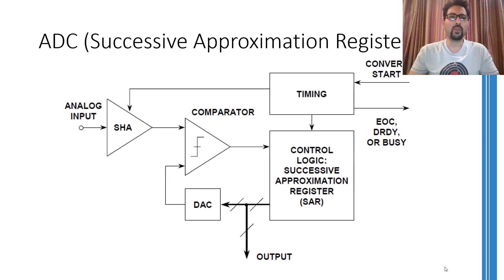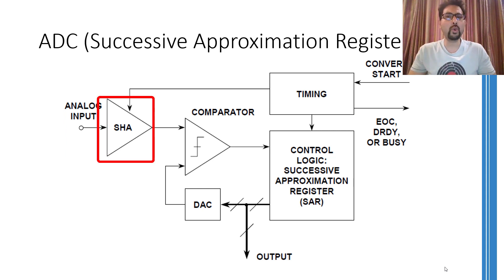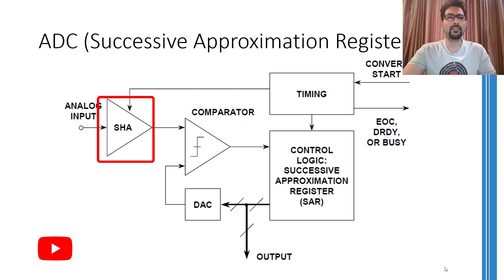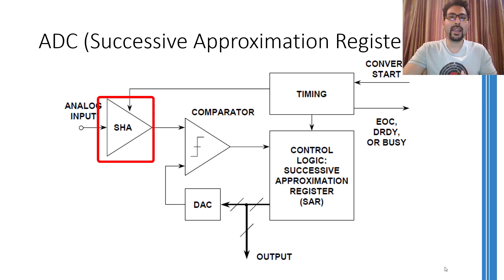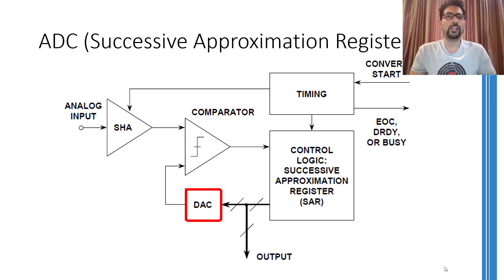This flow diagram shows the basic working of the successive approximation ADC. The timing circuit is responsible for controlling the clocks of the whole circuit. The operation starts when the analog input is applied. The sample and hold circuit will hold the analog input unless the timing circuitry signals that the conversion has completed, and then it lets go of the previous input and holds the next one. The input held by the sample and hold circuit is applied as one input to the comparator, while the other input comes from the digital to analog converter.